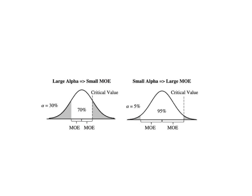In the diagram on the left, alpha was chosen by the tester to be 30%. The unshaded white area is thus 100% minus alpha, or 70%, and the margin of error, MOE, is one half the width of this white area.